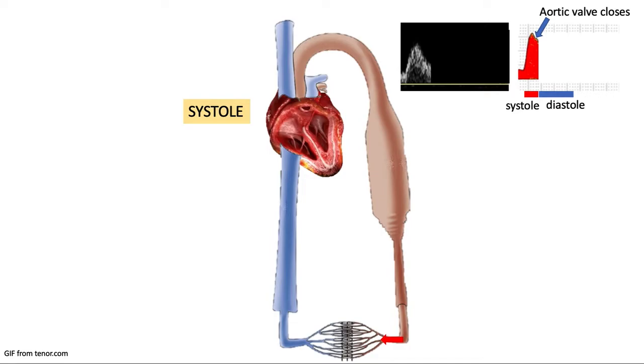And this is called the dicrotic notch. Again, when the outflow through the peripheral vessels exceeds the volume being ejected by the heart, the pressure will begin to decline. It is seen in spectral waveform as the dicrotic notch. It is when the aortic valve closes.